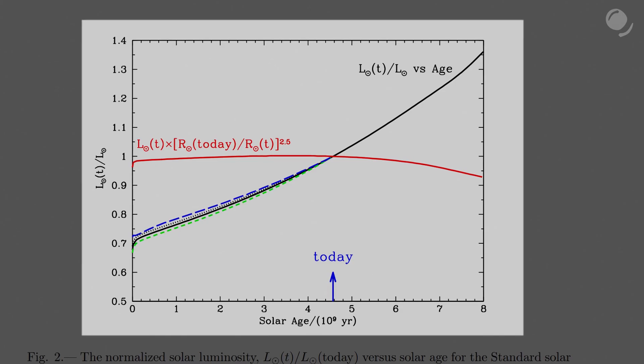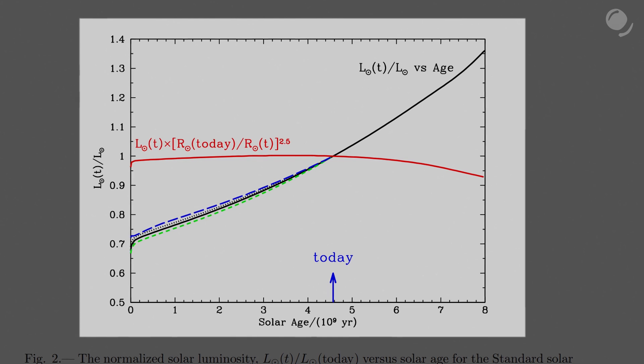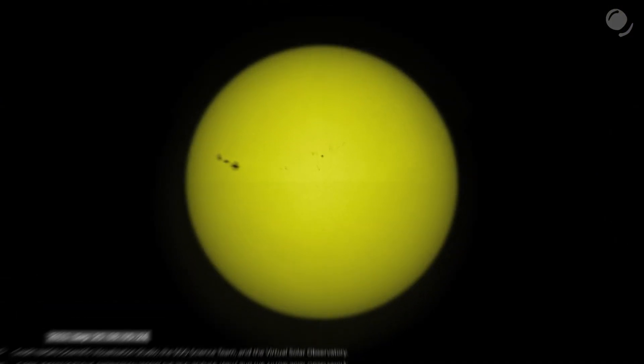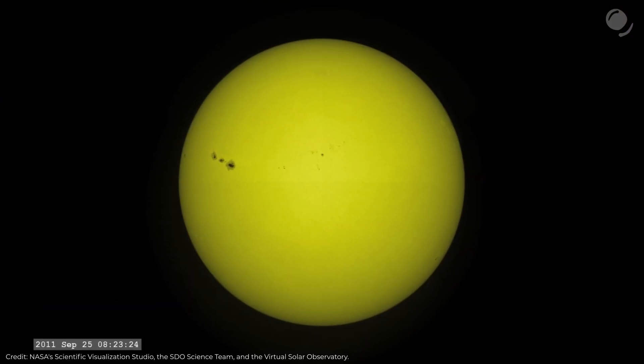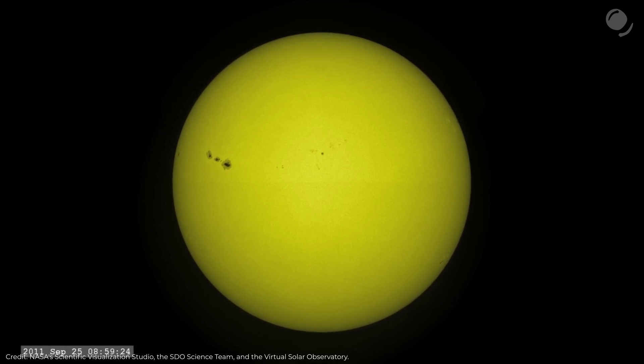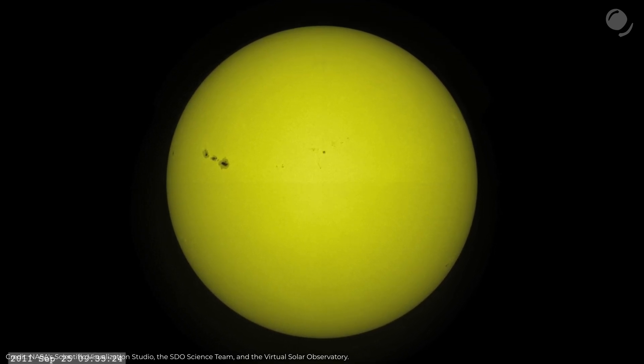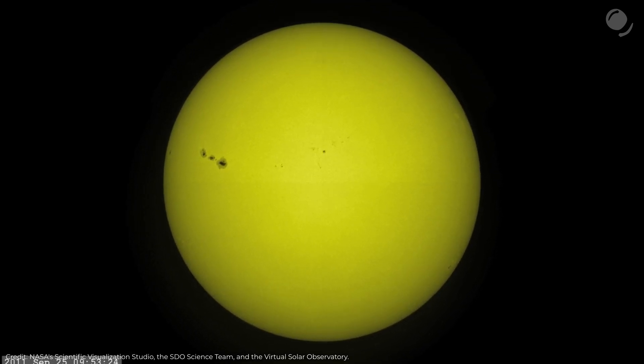So the Sun used to be 30% fainter. This graph shows how luminosity changed over time, according to some models. It's not only luminosity that changes — the Sun also gets bigger. Initially, its radius was smaller than it is today. This is why we think that the Sun was dimmer and the Earth could have been much colder.